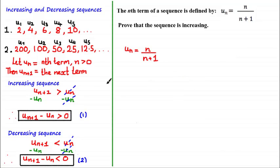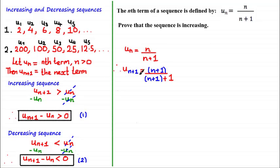Back to our example. To prove the sequence is increasing we need to show that u sub n plus 1 minus u sub n is greater than 0. We already have u sub n equals n divided by n plus 1. To find u sub n plus 1, simply replace every n with n plus 1 in the expression. So u sub n plus 1 equals n plus 1 divided by n plus 2, where the 2 comes from 1 plus 1. We now have both u sub n and u sub n plus 1.